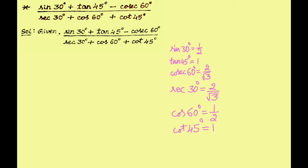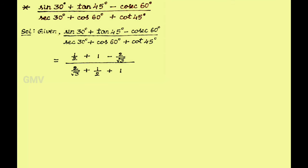We know that sin 30 degree is 1 by 2, tan 45 degree is 1, secant 30 degree is 2 by root 3, cos 60 degree is 1 by 2, and cot 45 degree is 1. Now substitute these values. We get 1 by 2 plus 1 minus 2 by root 3 whole square, whole divided by 2 by root 3 plus 1 by 2 plus 1.